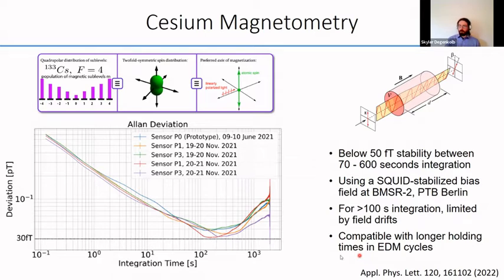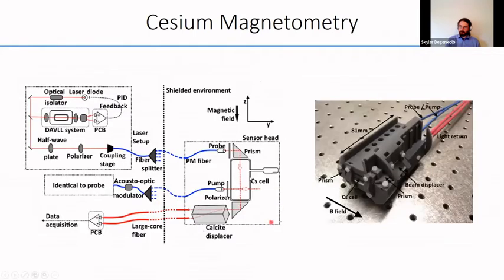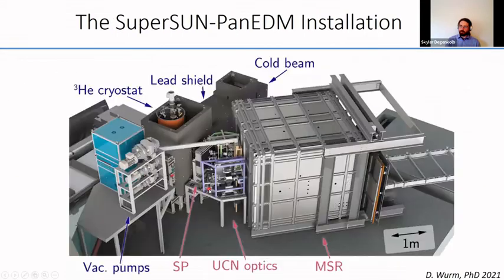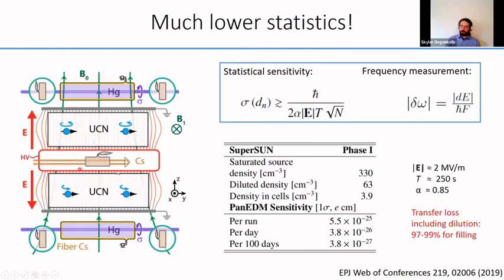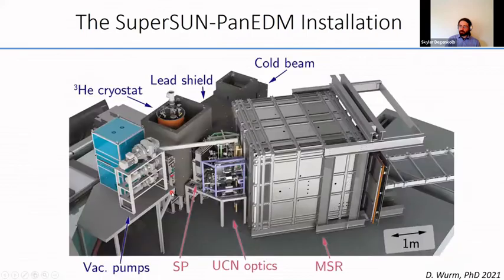We need more of these sensors than we have at the moment, but we've succeeded in getting about four of them working—enough to be confident continuing to scale up. Not only can they be run in fiberized mode, but for the one sitting inside the central high-voltage electrode, the laser beams propagate in free space, and that operation mode has also been tested.